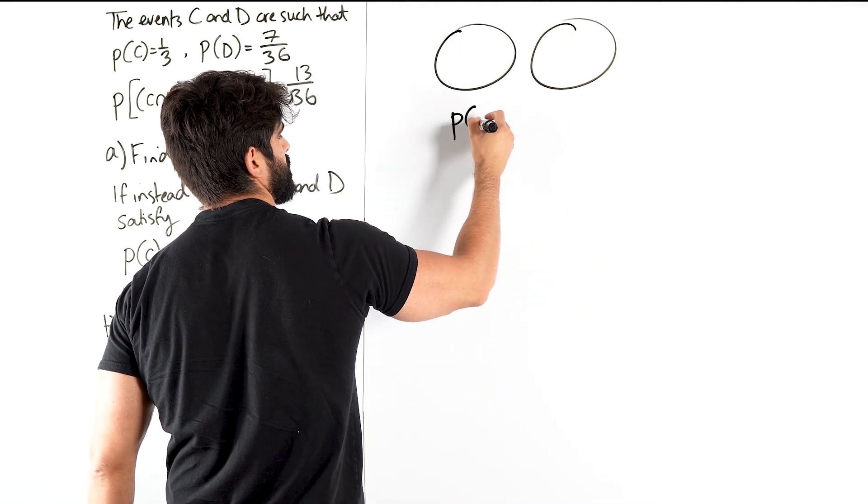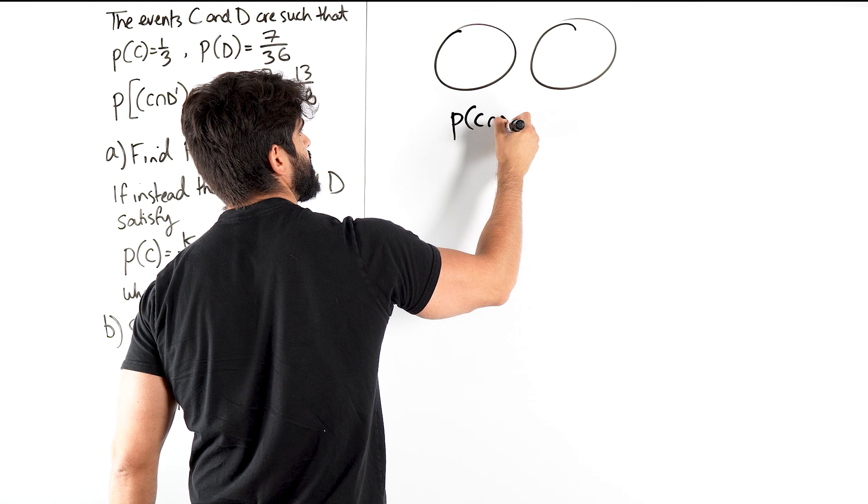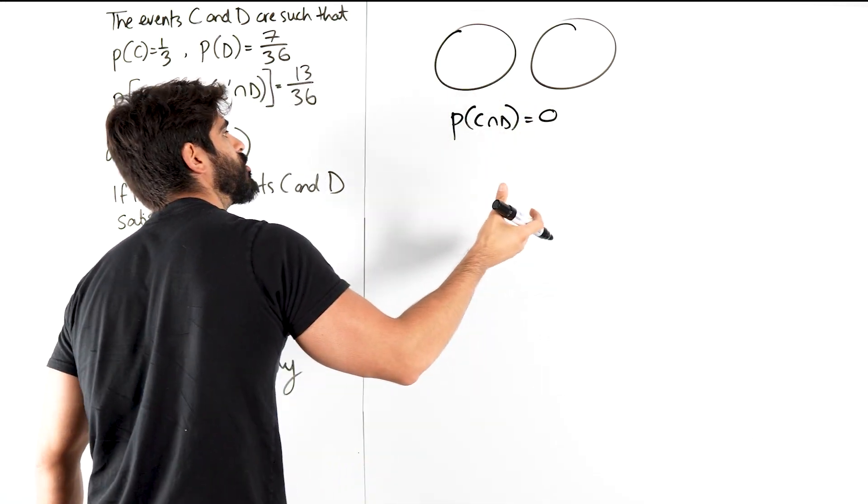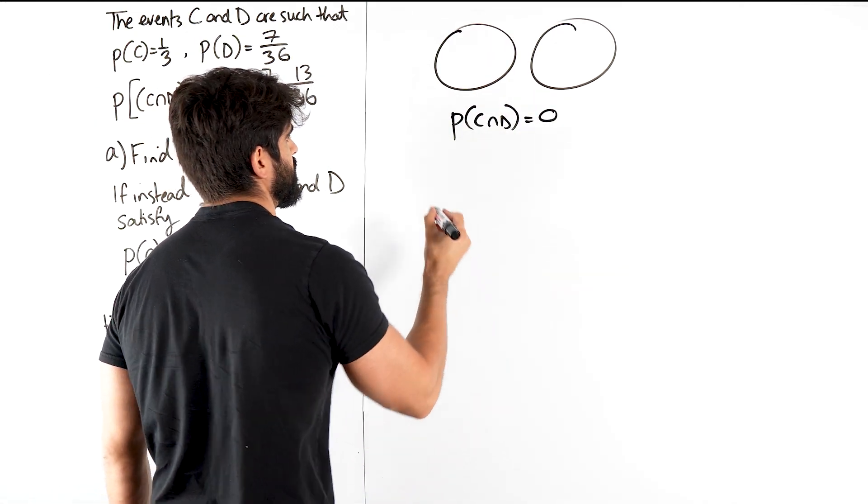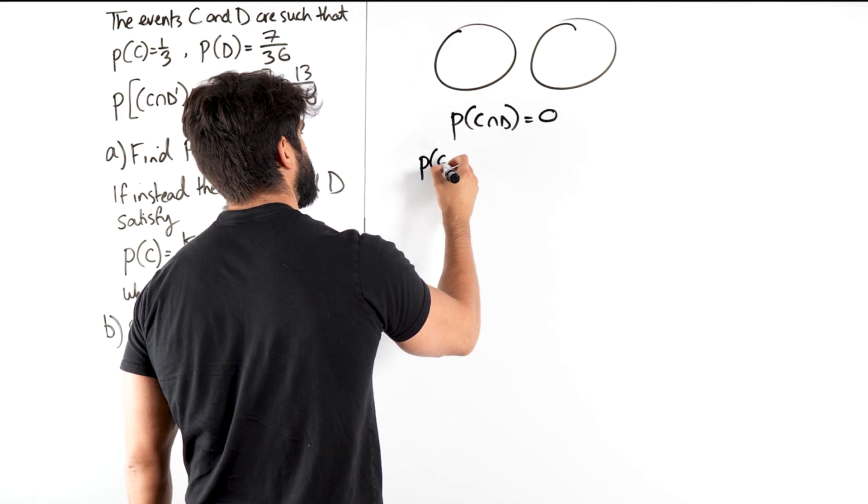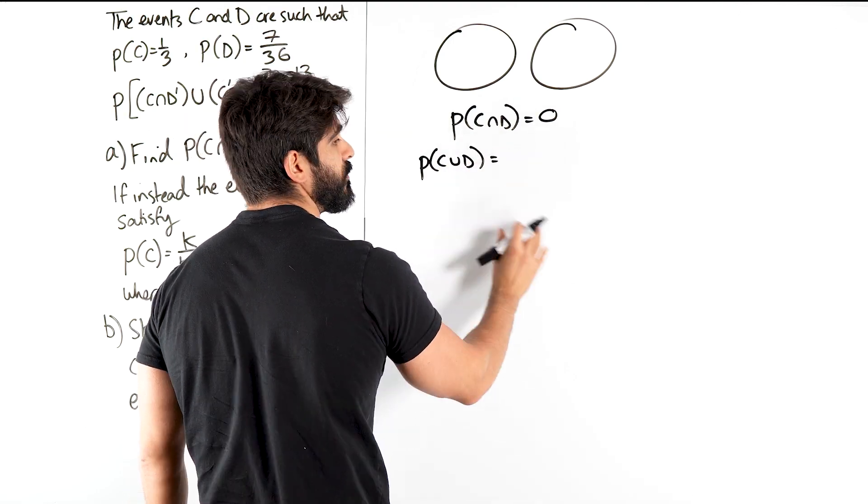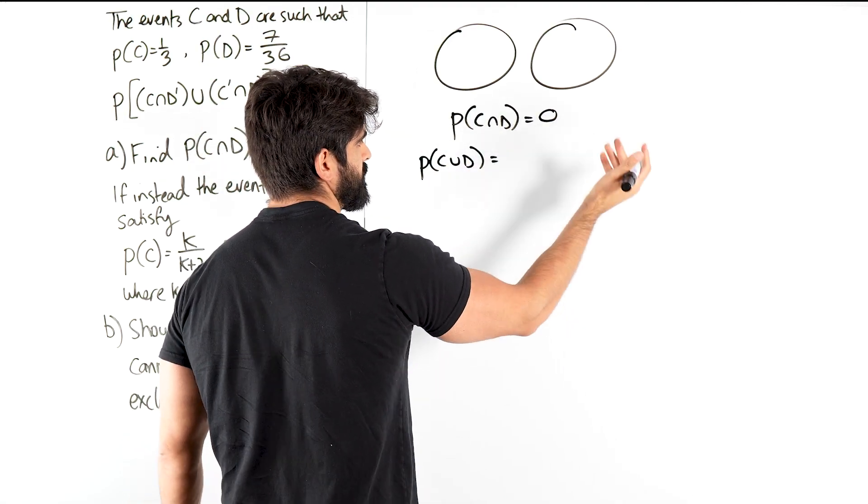So it could mean one of two things. It's the probability that C and D is 0, which I don't know how we would show that given this. Or we can go back to the addition rule and say that the probability of C or D, I wrote it before.